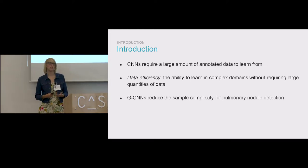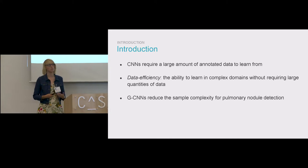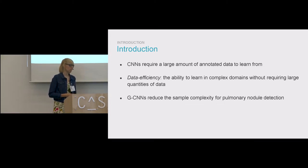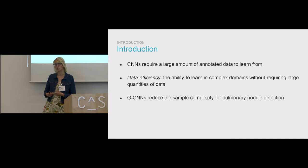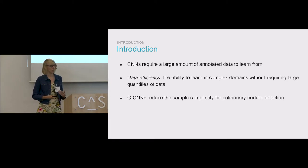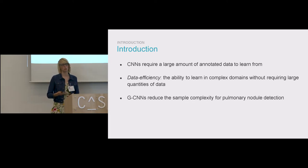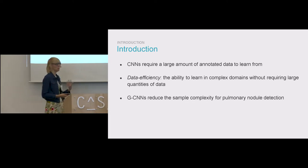Deep learning and convolutional neural networks in particular have become the methodology of choice for medical image analysis. A drawback of using CNNs is that they typically require large annotated datasets to learn from, and these kinds of datasets are scarce in the medical domain. This is due to patient privacy concerns, but also because creating such a dataset is a very labor-intensive process if you want it to be high quality, representative, and sufficiently annotated. This suggests that data efficiency is a major hurdle, and motivates the work to look for ways to reduce the sample complexity of CNNs. That's what we do with GCNNs.